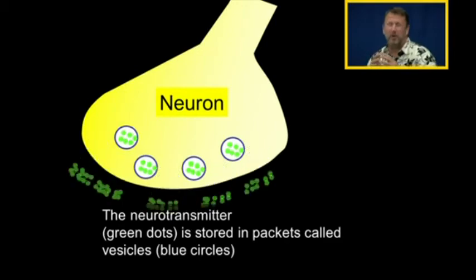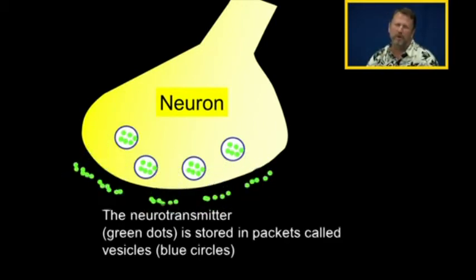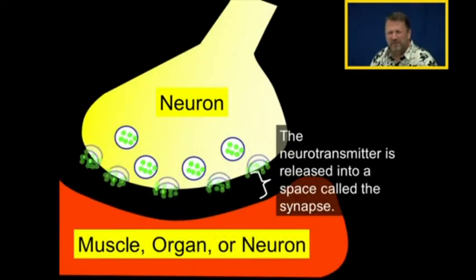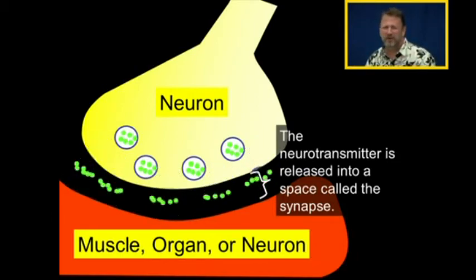Vesicles are the little packets that the neurotransmitters are stored in. The vesicles release neurotransmitter in response to action potential. The neurotransmitter is released into a space called the synapse, whether it's communicating with a muscle, an organ, or a neuron.